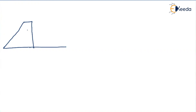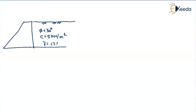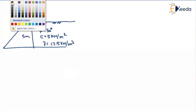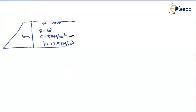Let me draw the diagram first. Let us consider a retaining wall where the backfill is truly horizontal. The properties of the soil are: phi equals 30 degrees, cohesion equals 5 kilonewton per meter square, and weight density gamma equals 17.5 kilonewton per meter cube. The height of the retaining wall is 5 meters. Since we have a C value, this comes under a C-phi problem.